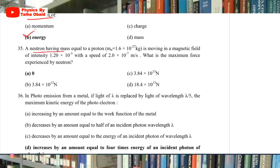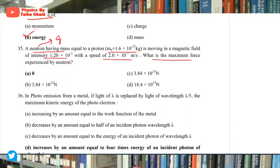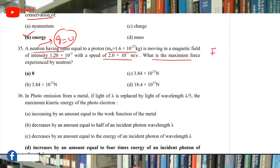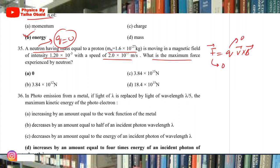Question 35: A neutron having a certain mass is sent with some velocity into a magnetic field. The force on it — neutron is neutral, it has no charge. By the formula F = qv×B, when charge q = 0, force = 0. So alpha is the correct answer.